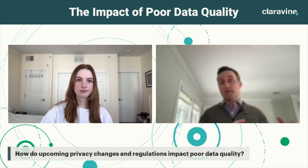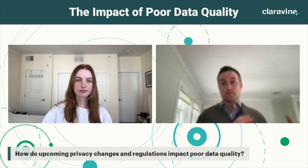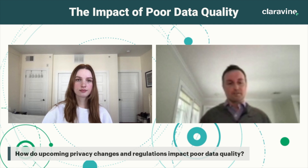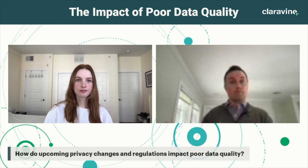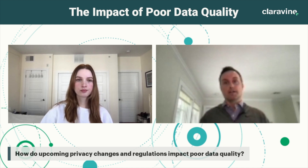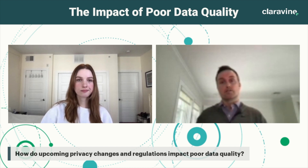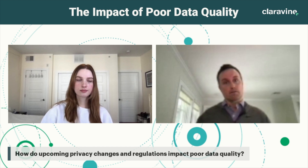The wisdom and advice I would give everybody is: control what you can control. These changes are going to continue to happen, and having a unified taxonomy and data standards in place is going to help you. We are about to embark on a journey from a world of observation — where so much data was available through cookies, retargeting, and identification mechanisms — to a world of experimentation. If you don't know what inputs are going into those experiments, how you're labeling audiences, cohorts, and campaigns, it's going to be really challenging. Control what you can control, and the first step is having a unified taxonomy across your organization.